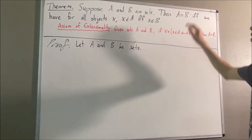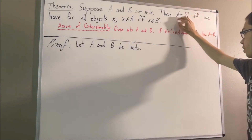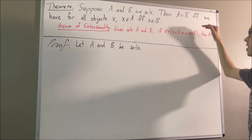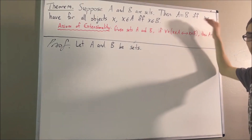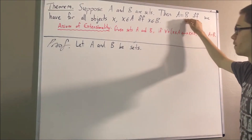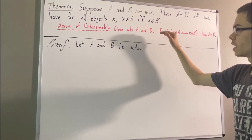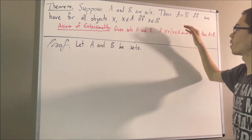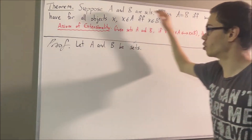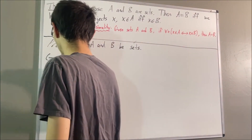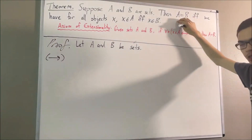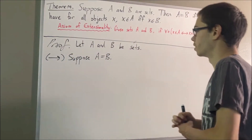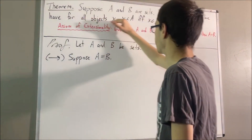To start out the proof, let's give ourselves two sets A and B. Our goal is to prove A equals B if and only if for all X, X is an element of A if and only if X is an element of B. To prove a statement containing if and only if, we prove each direction separately. Let's start by proving the forward direction — suppose A is equal to B.